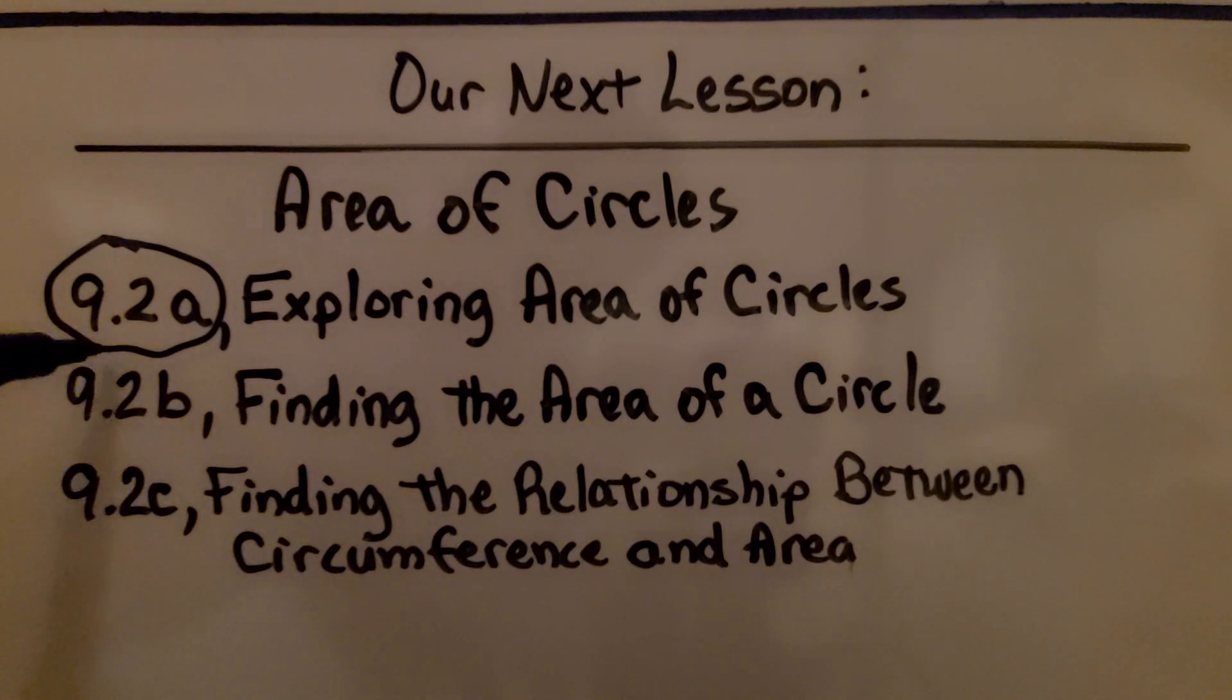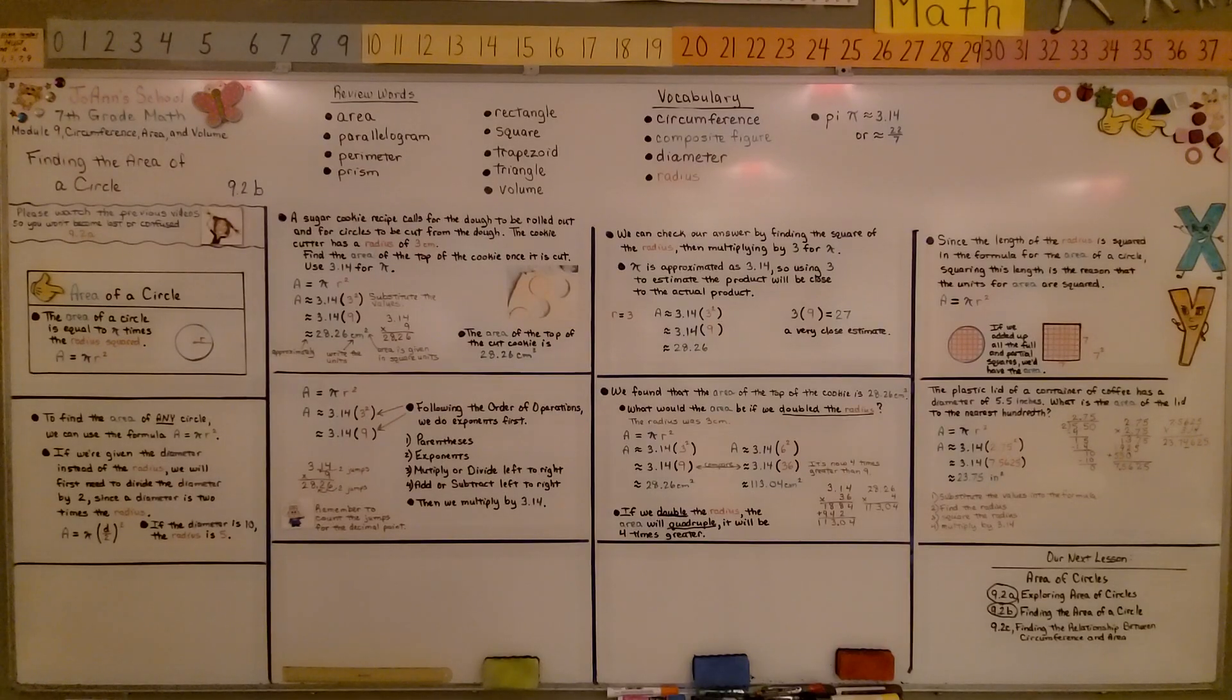Okay, we're finished with 9.2b. We're moving on to the last part of 9.2. We're going to be finding the relationship between circumference and area. Just remember to cut that diameter in half because we're doing the radius squared. I hope the rest of your day is great and join me for the next part of the lesson. Bye.